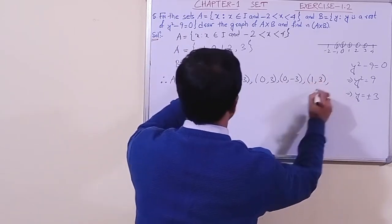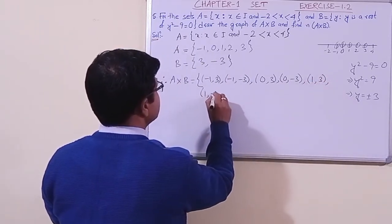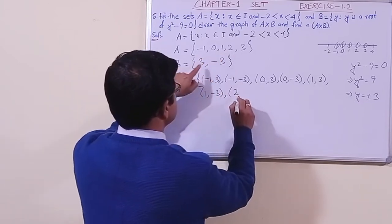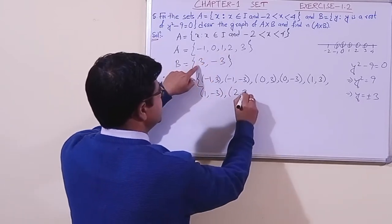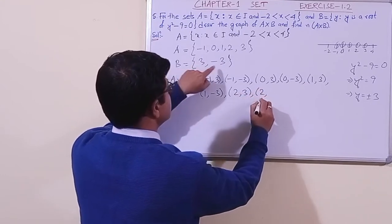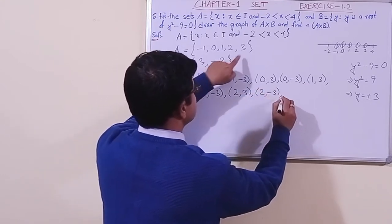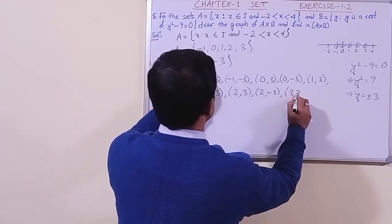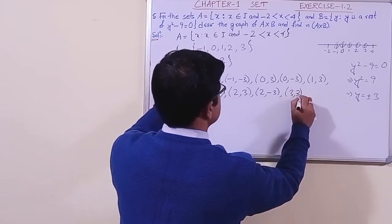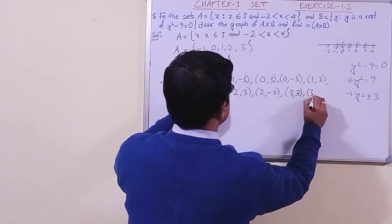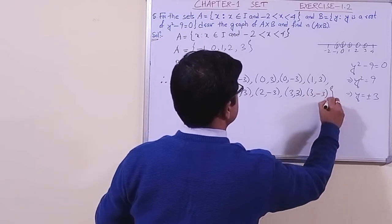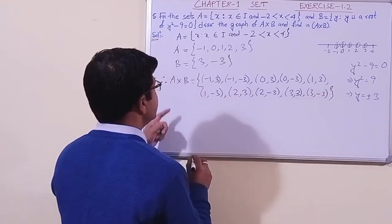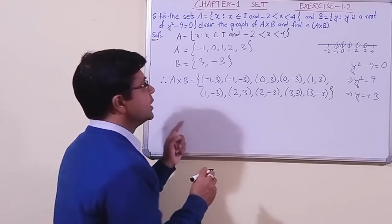Continuing: (1, 3), (1, minus 3), then (2, 3), (2, minus 3), then (3, 3), and (3, minus 3). So we have obtained the complete set A cross B.